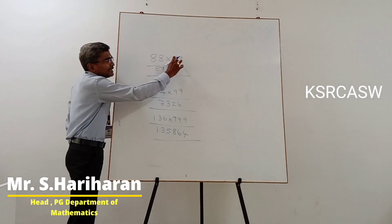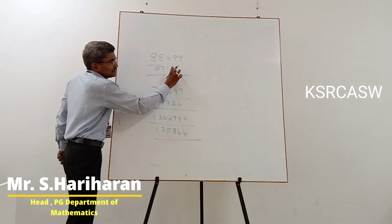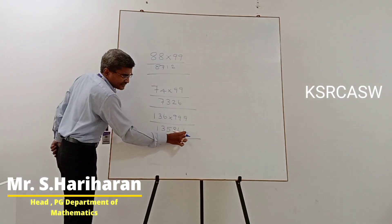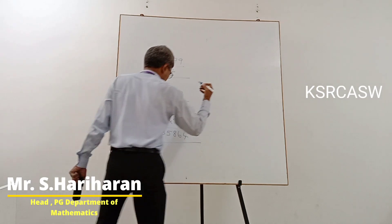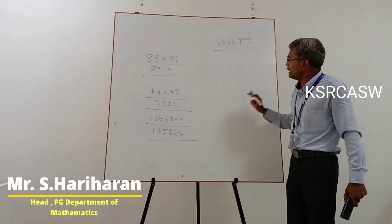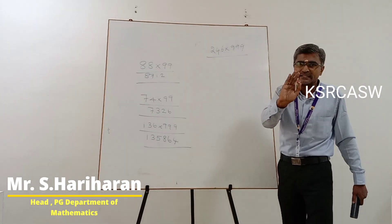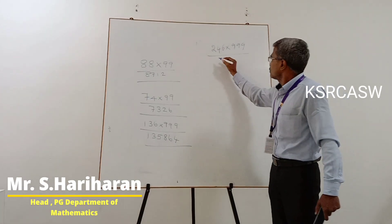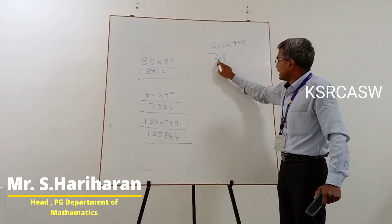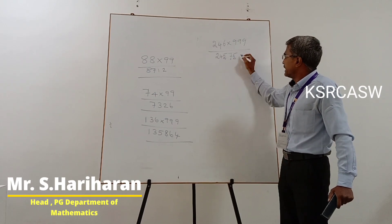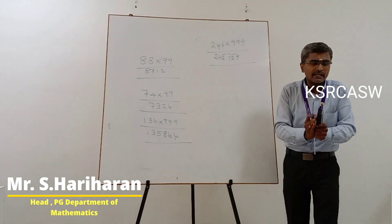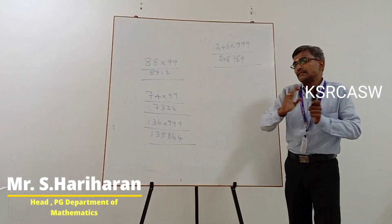So, 2-digit times 99 gives a 4-digit answer. Similarly, 3-digit times 999 gives a 6-digit answer. Another example: 246 into 999. The answer: 246 minus 1 is 245. Then 9 minus 2 is 7, 9 minus 4 is 5, 9 minus 5 is 4. Total 6 digits. The condition is: number of digits equals number of 9s.